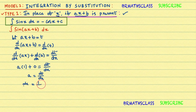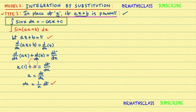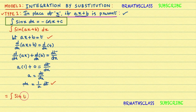Now observe: ax plus b equals t, and dx equals (1/a) dt. Substitute these two things into the question. The integral becomes: integral of sin(t) into (1/a) dt.